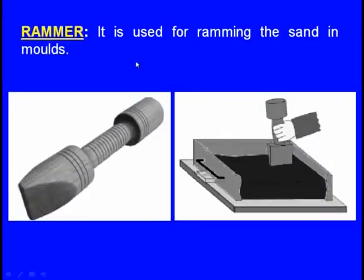Next, rammer: it is used for ramming — that is, tightly compacting — the sand in the moulds. After placing the moulding sand above the pattern inside the moulding box, the rammer is used to compact it everywhere.